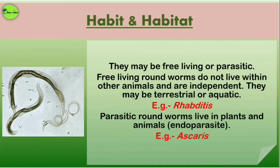Now this is very interesting — the Aschelminthes can be free-living or parasitic, like endoparasites. The free-living roundworms do not live within other animals because they are independent, and they may be terrestrial or marine, like the Rhabditids. The parasitic roundworms live in plants or animals, like Ascaris.